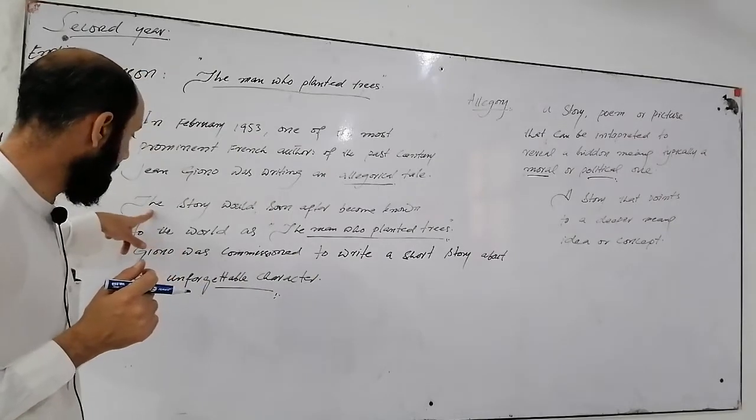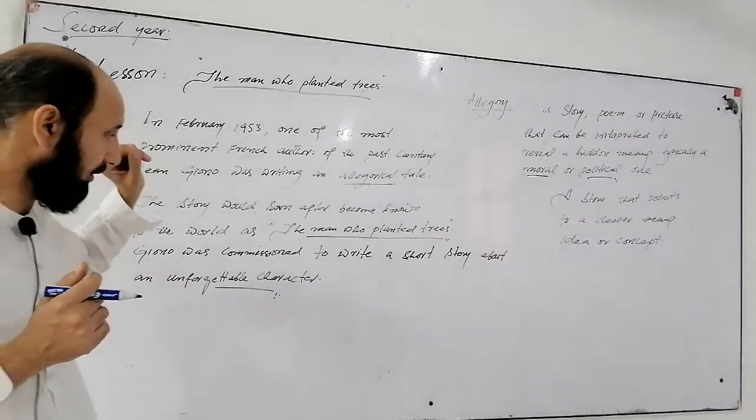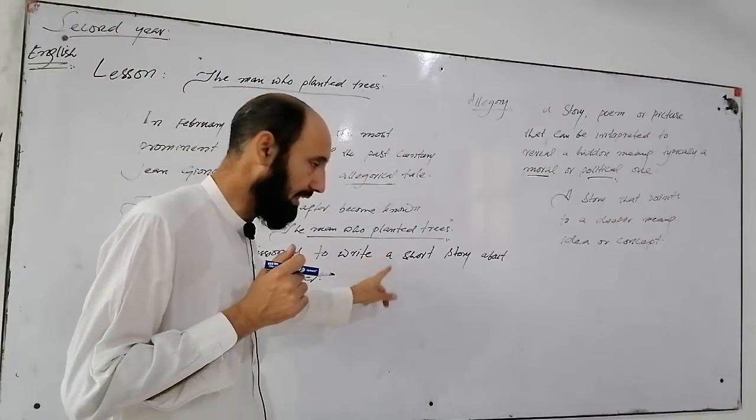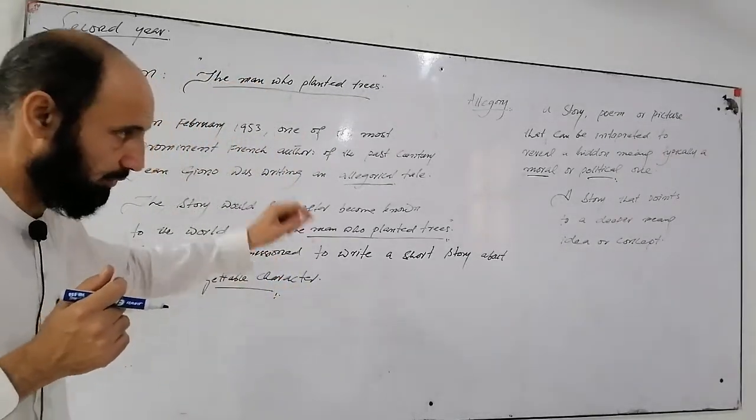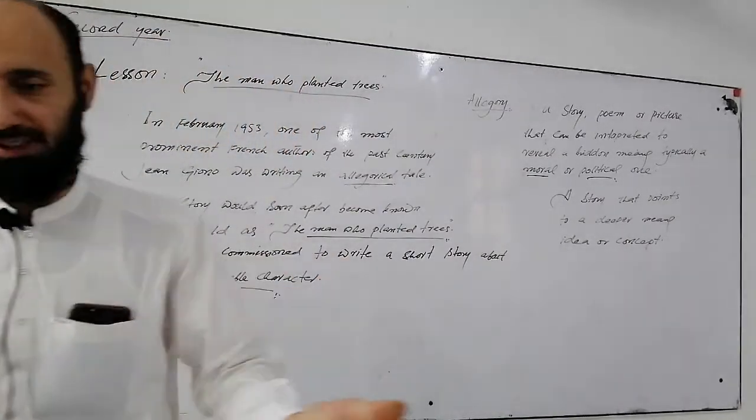Jean Giono created a character under the name of Elzéard Bouffier, a shepherd, and he gave an unforgettable character to the world. Next we discuss a poem.